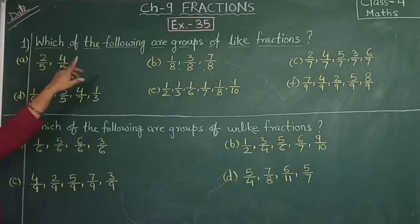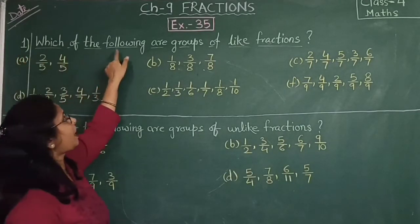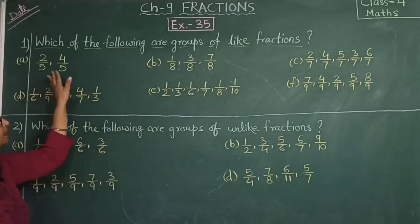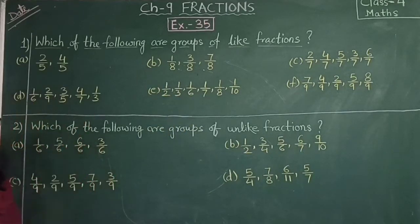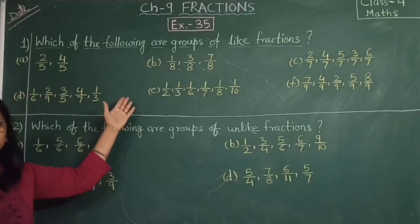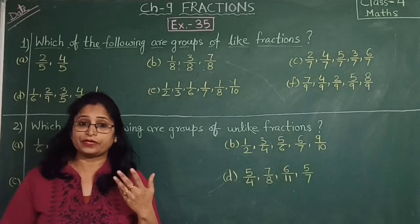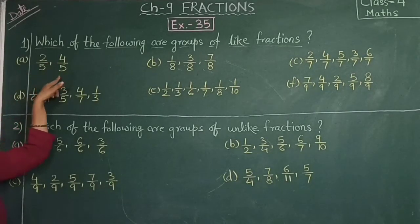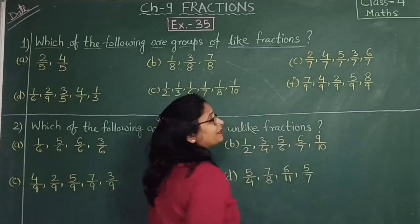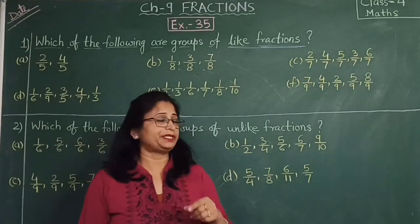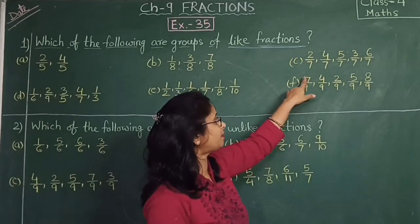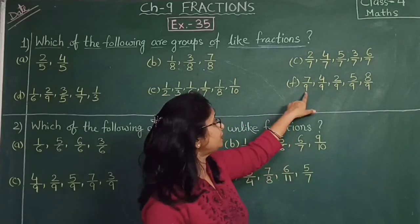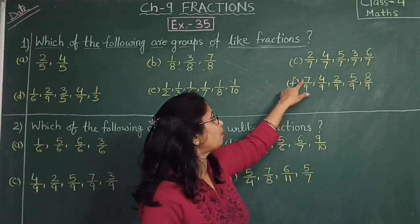Let's start. In exercise number 35, the first question is: which of the following are groups of like fractions? Now, what is a like fraction? Look at a fraction — it has a number on top and below the line there is a number; that number below is called the denominator.